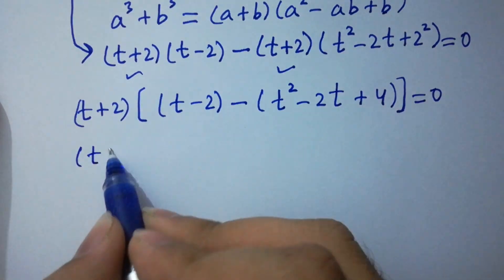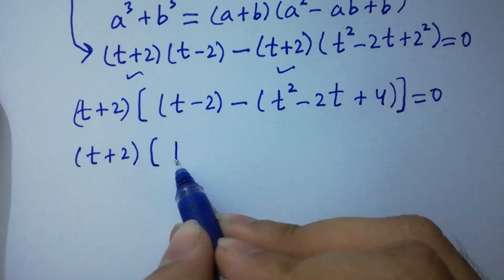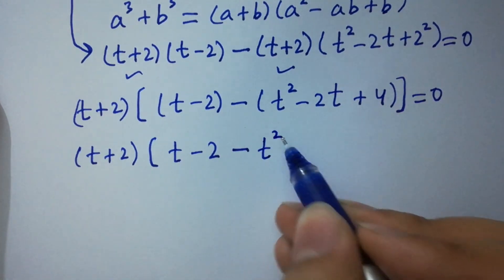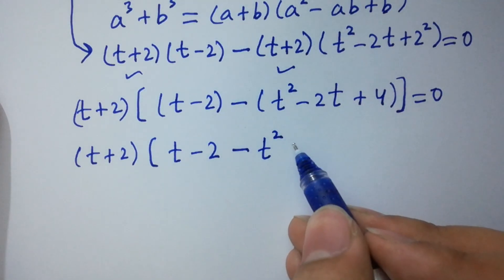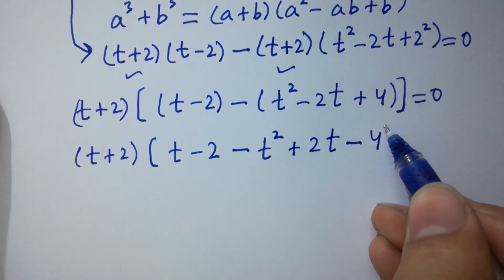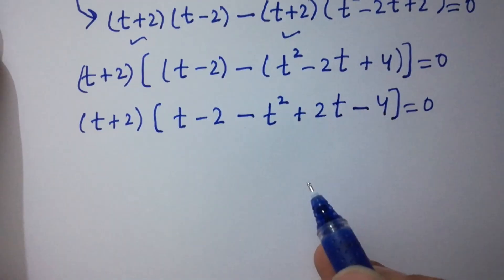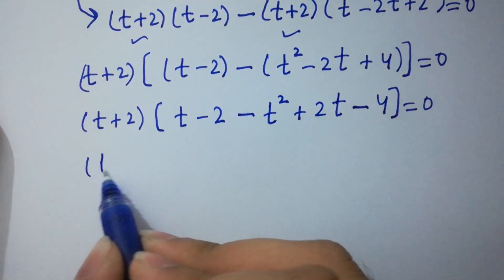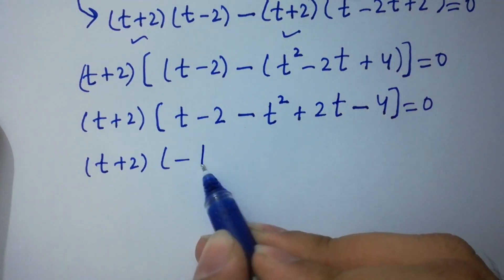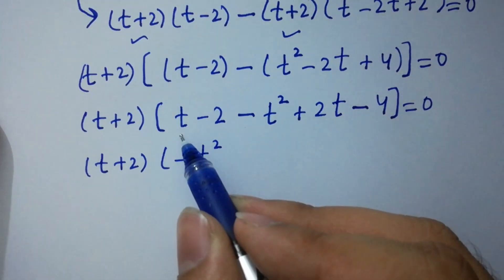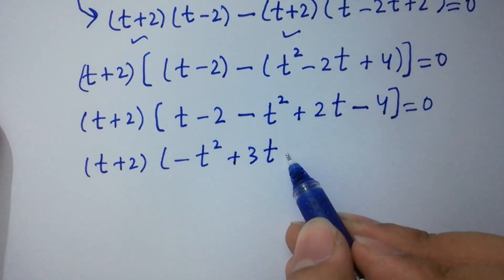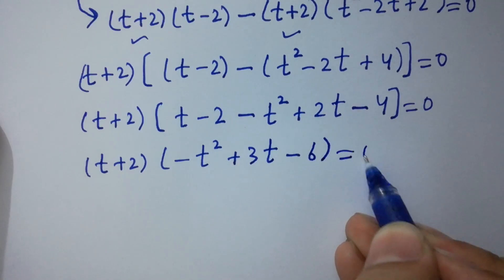Keeping t plus 2 as it is, we expand the bracket: t minus 2 minus t squared plus 2t minus 4 equals 0. Collecting like terms inside: minus t squared plus 3t minus 6 equals 0.